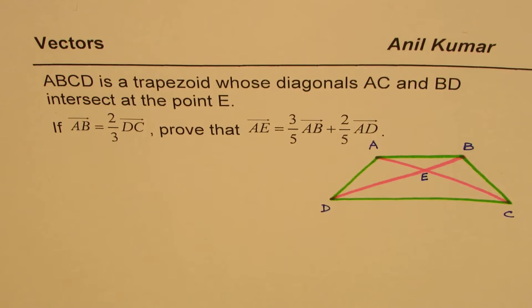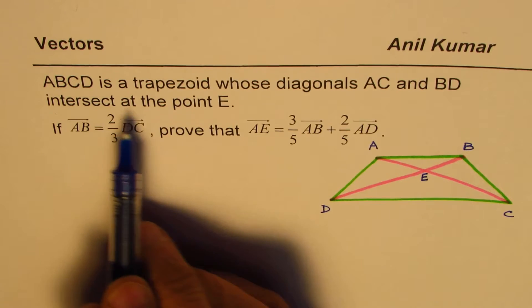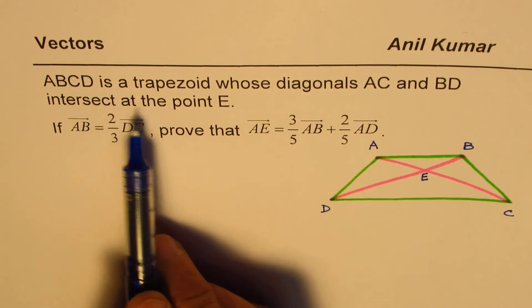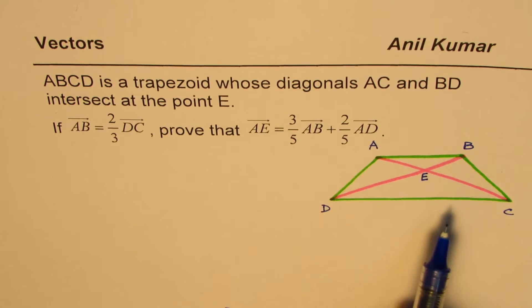I'm Anil Kumar sharing with you one of the most important test questions on vectors. The question here is ABCD is a trapezoid whose diagonals AC and BD intersect at the point E. The diagram is given to you.